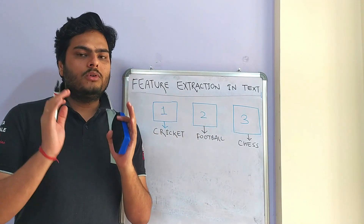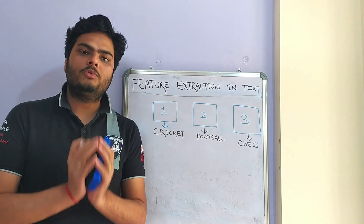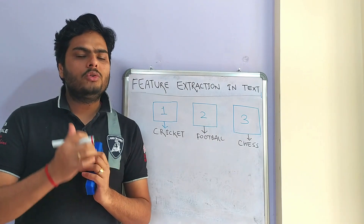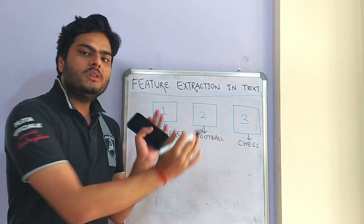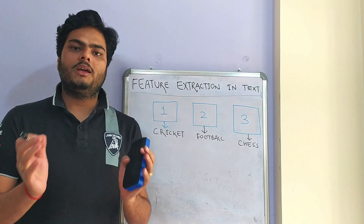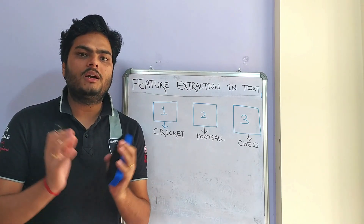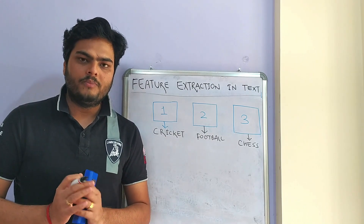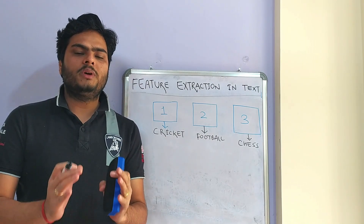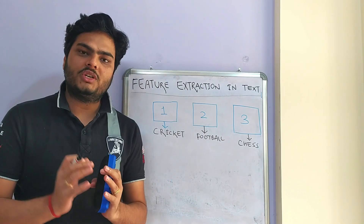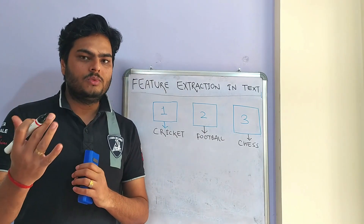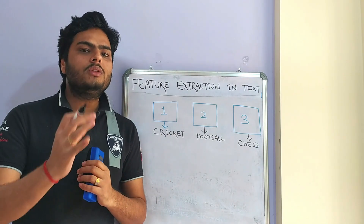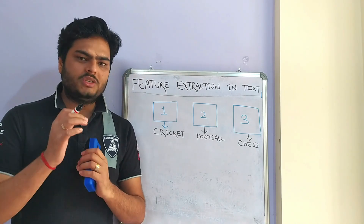Now for fitting the data in a machine learning algorithm, you have to do something called feature extraction from the training data. How do you extract features from this text data and feed that into a machine learning algorithm? That is what we will learn in this video. Welcome to Unfold Data Science. I'm Aman, a data scientist, and I'm going to build a very solid foundation of feature extraction in text for you.